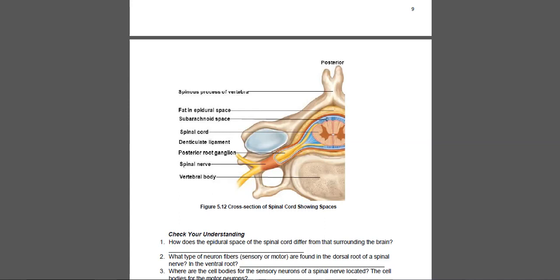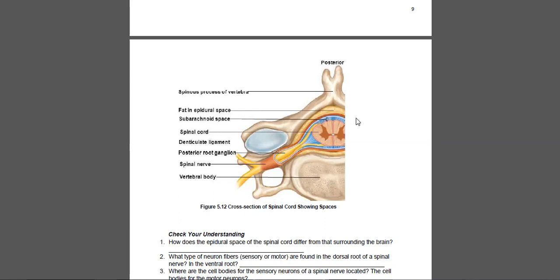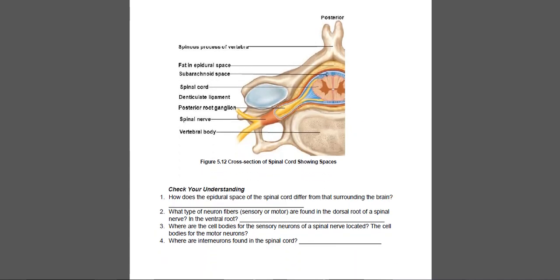Here we see the spinal cord in relation to the vertebrae it runs through. The same meninges around the brain also surround the spinal cord: dura mater, arachnoid mater, and pia mater. There is also the epidural space — the subdural space is under the dura mater, while the epidural space is above the dura mater between it and the bone. If you know someone who's had an epidural, the injection goes into this epidural space.